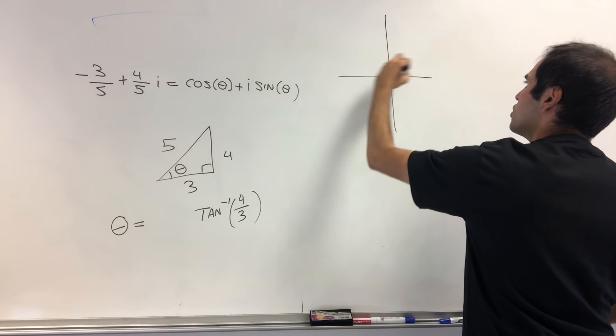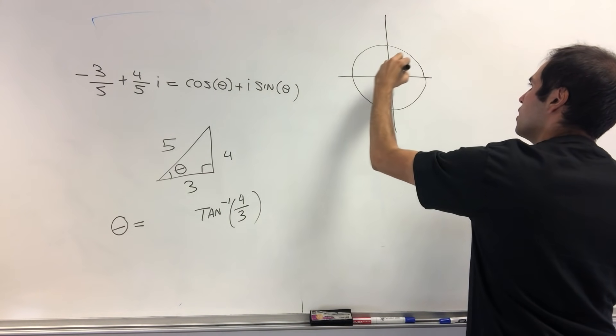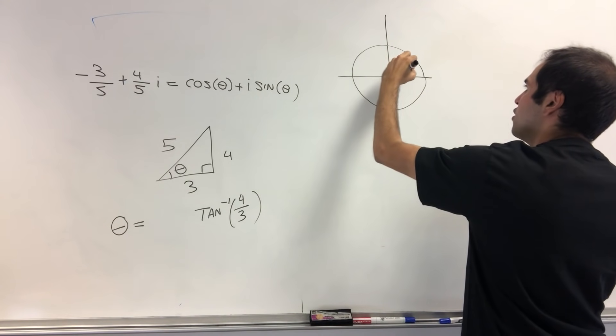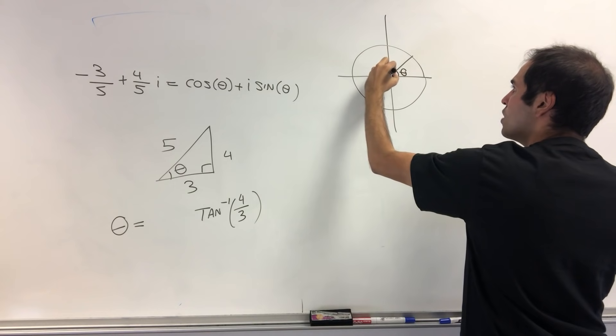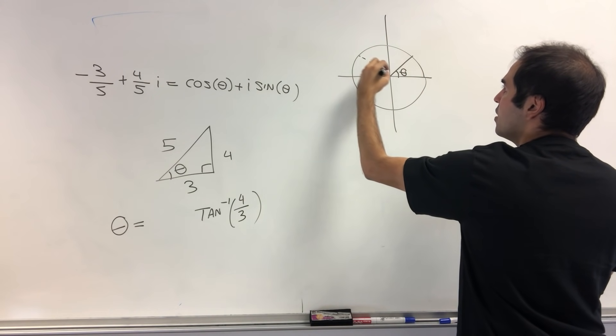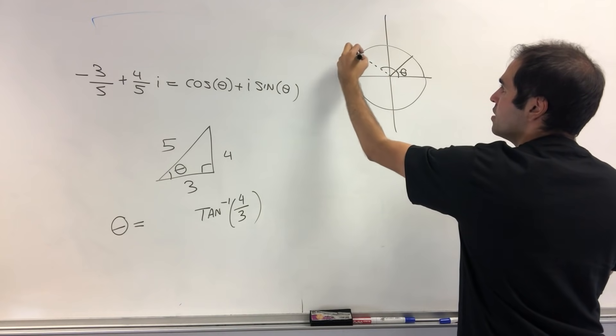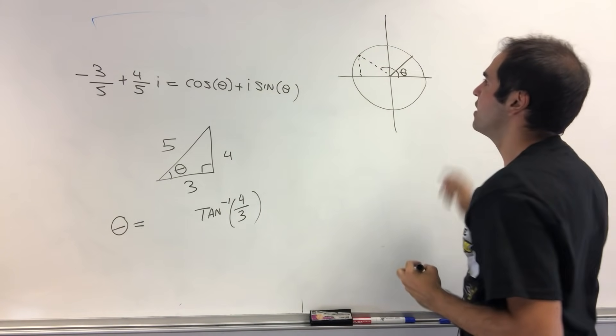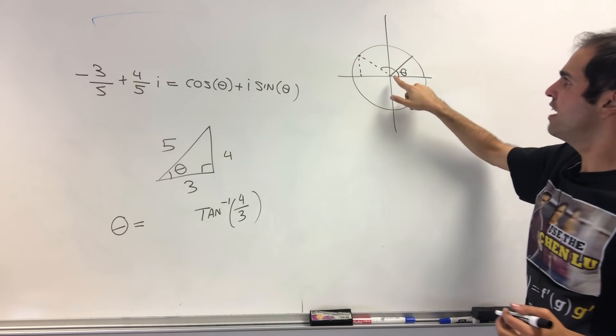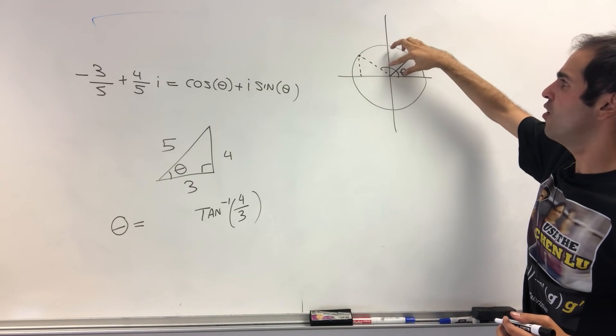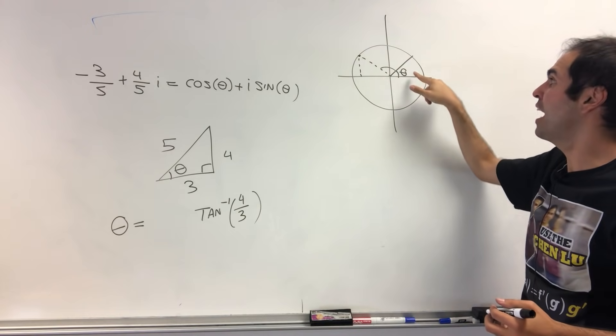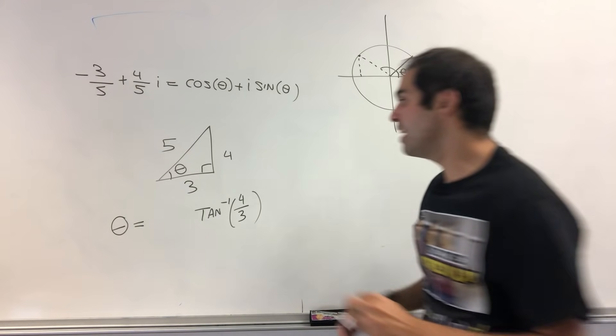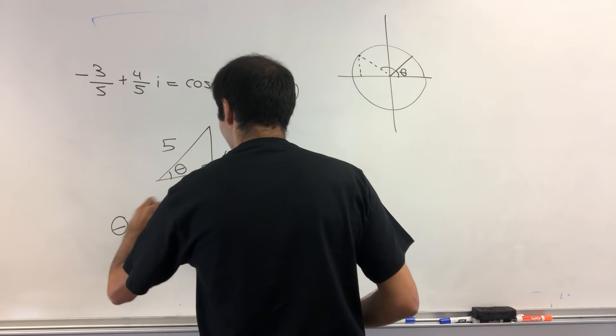So kind of in terms of our unit circle, if let's say this is our arctangent of 4 thirds, really what we want is this angle here. This one here. Because, again, same value of sine, but negative value of cosine, and the question is, what is this angle? Well, it's just pi minus that angle. So really, theta is pi minus arctangent of 4 thirds.